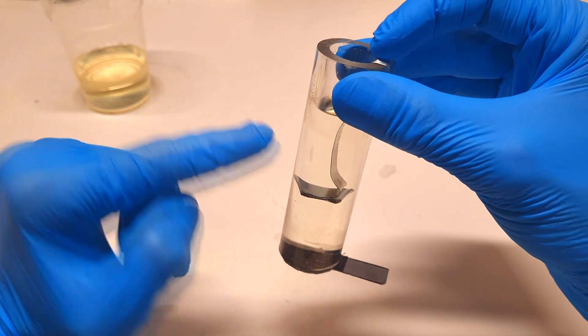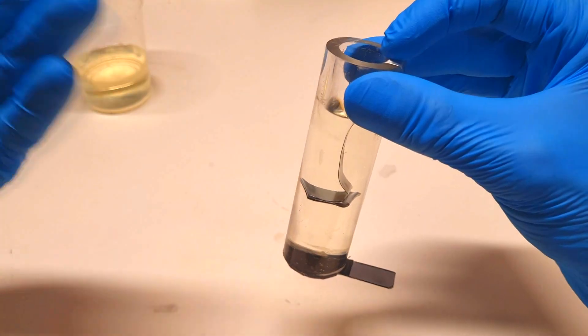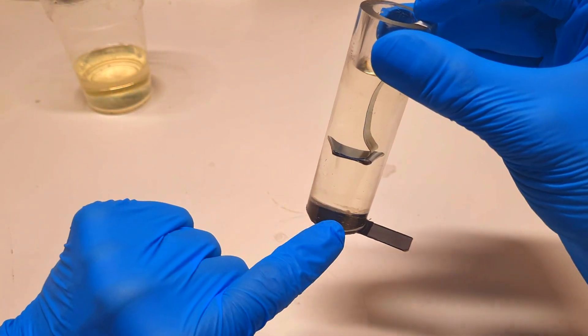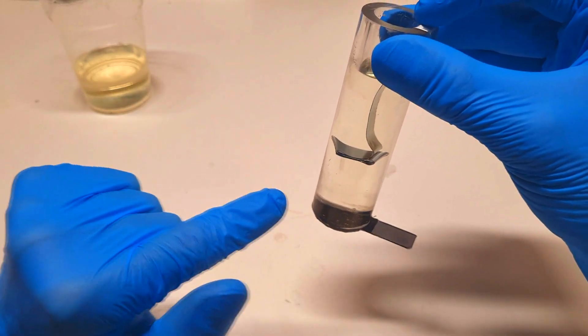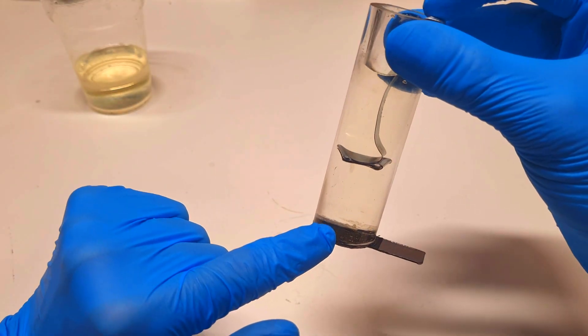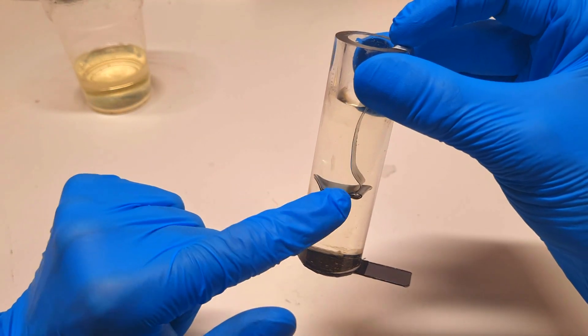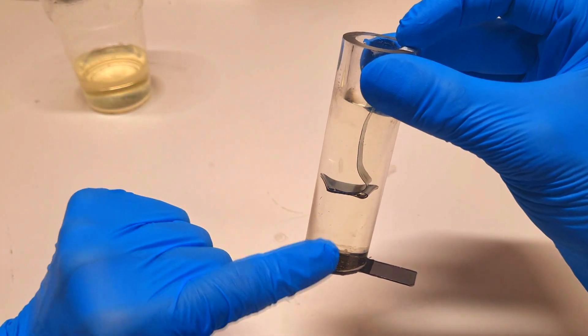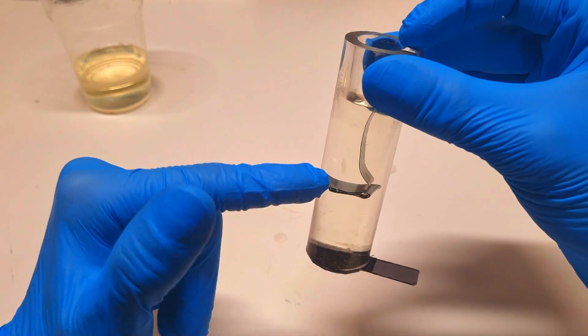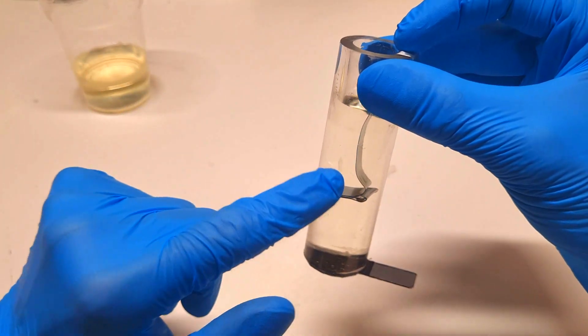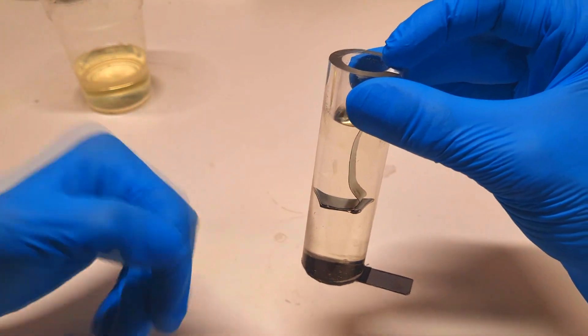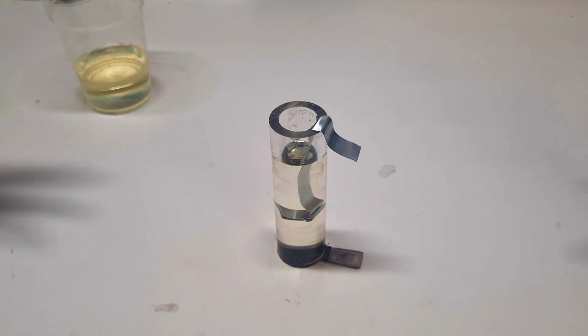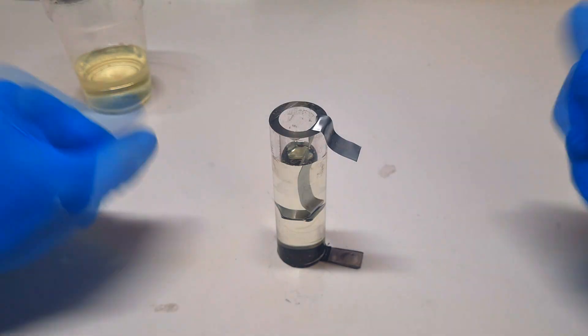But this cell will not be really good because first we have here some really limited surface area and also the distance between the anode and the cathode is too big. For this reason the power which we will get out from this basic design will not be really good. But anyway I want to see what I can get out from this basic design.